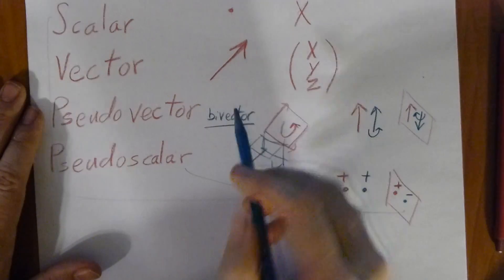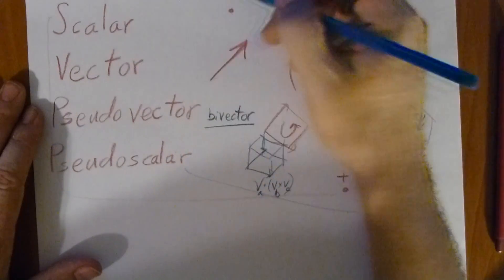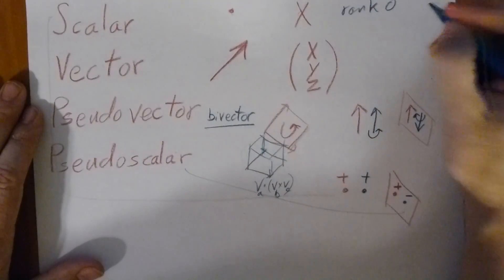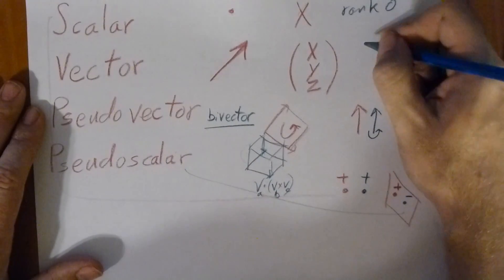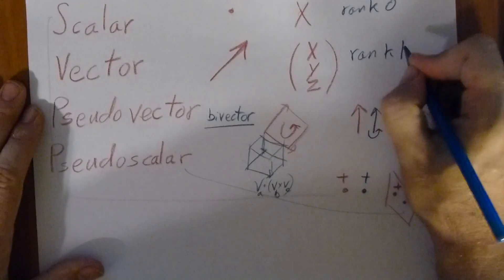We can also think of a scalar as a rank zero quantity, vector as a rank one quantity.